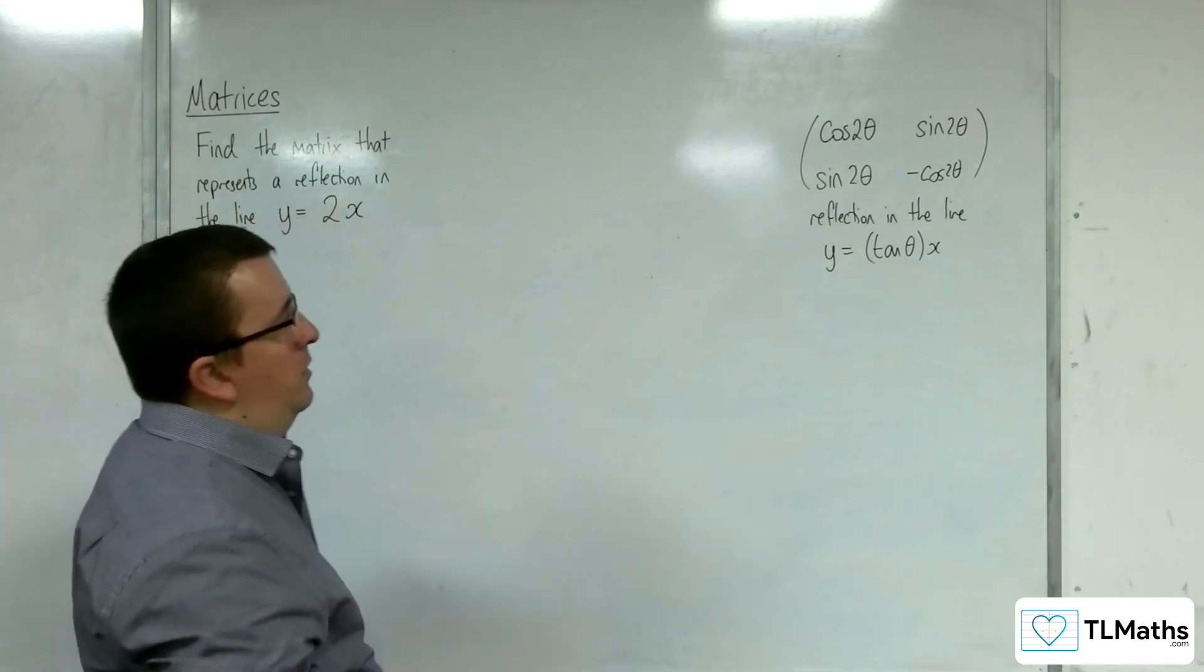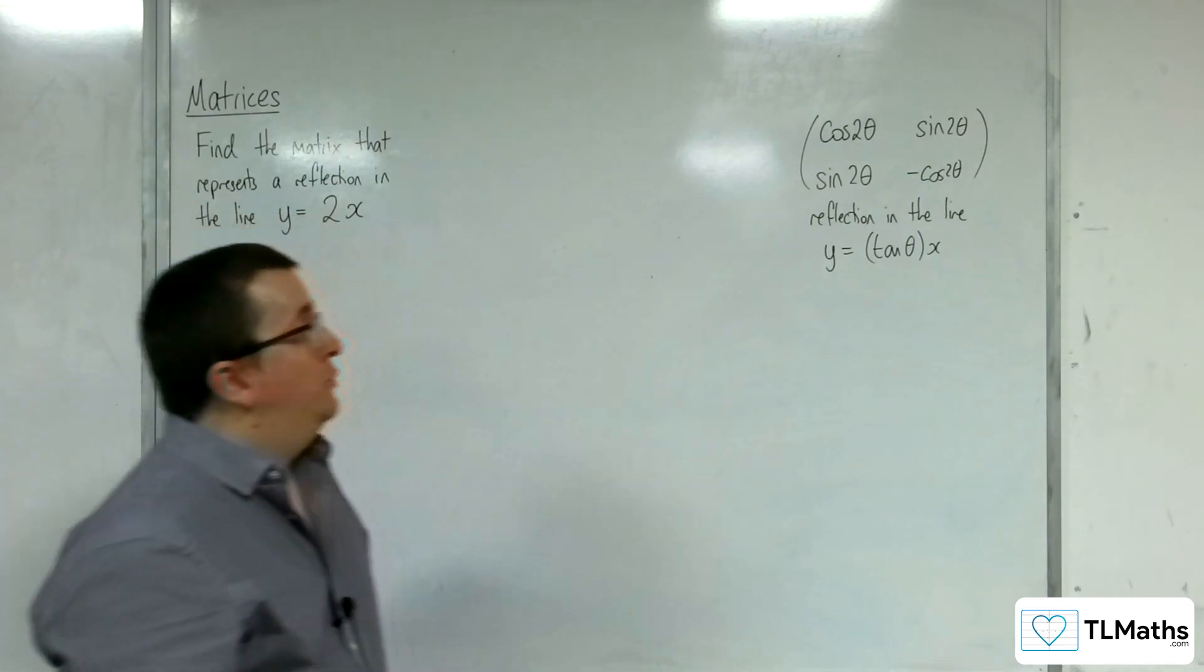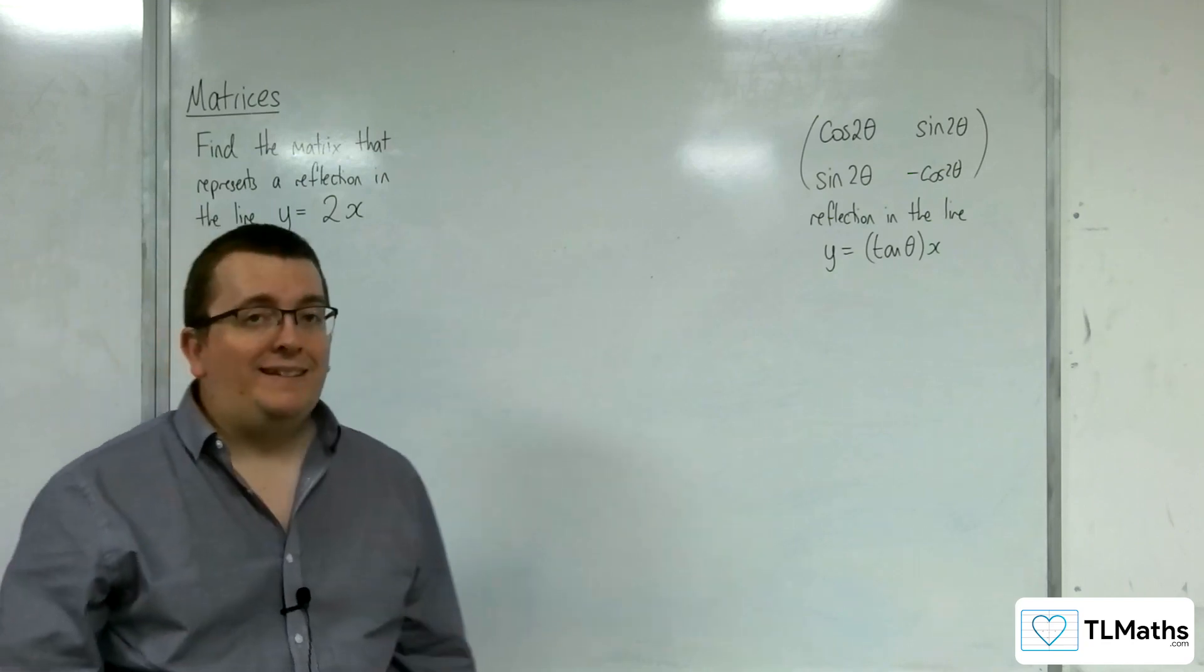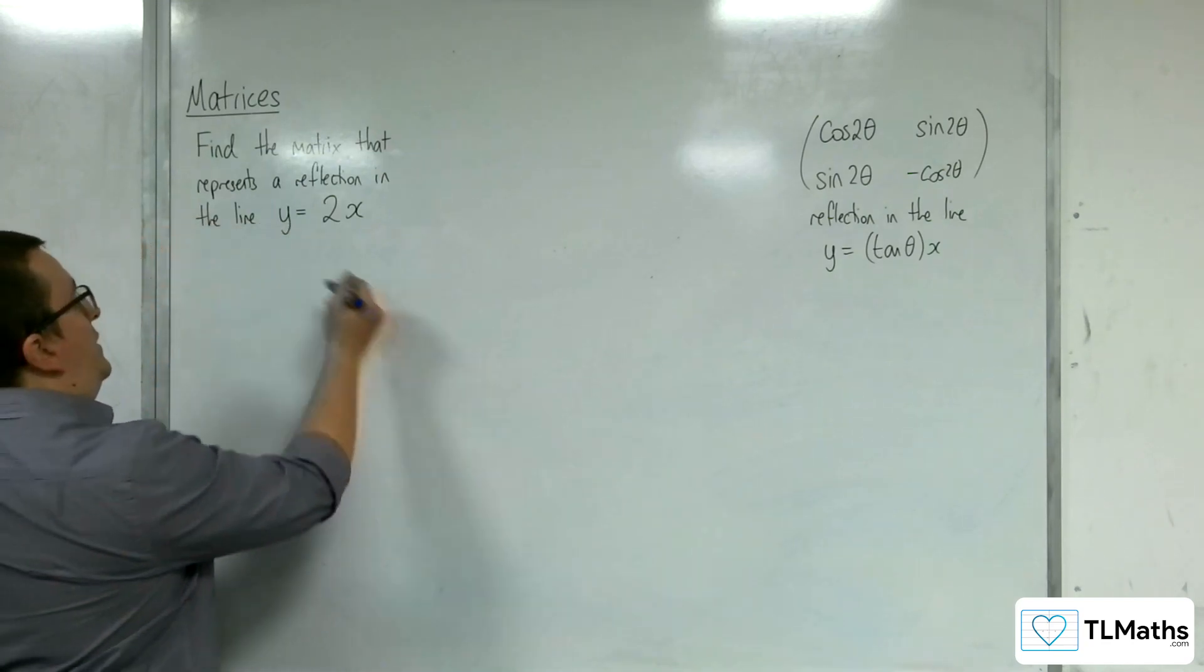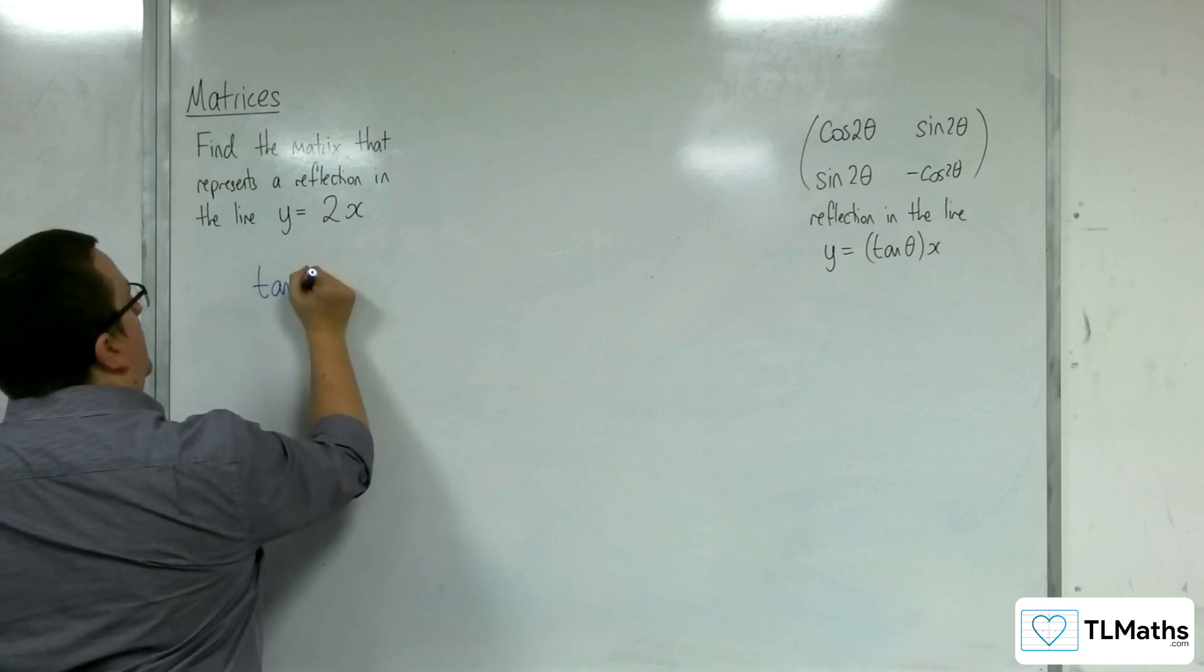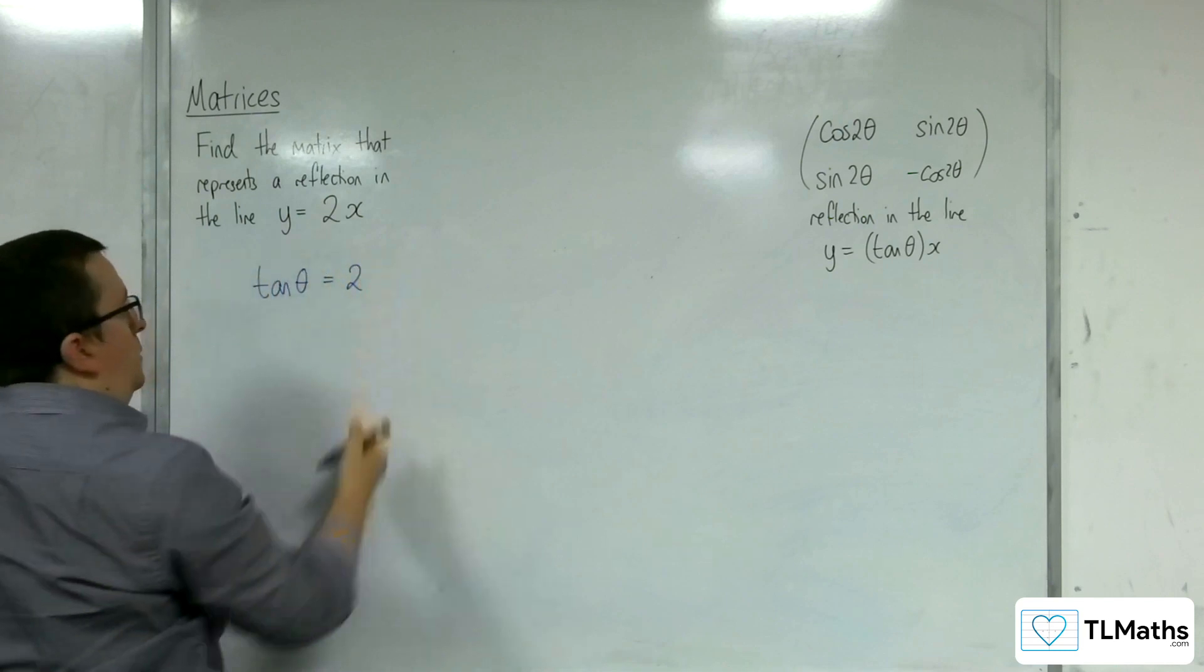Here is my general matrix that represents a reflection in the line y equals tan theta x. So what that means is that tan theta will have to be equal to 2.